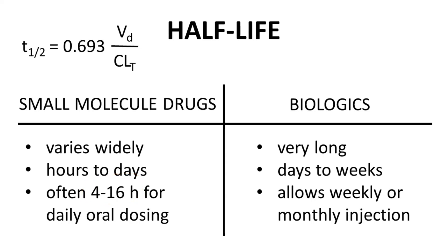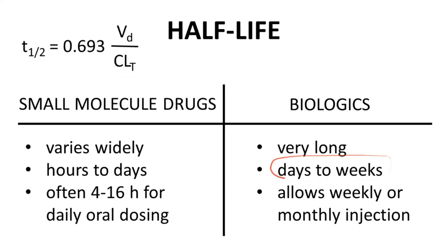In contrast, biologics, although their volume of distribution is low, have an extremely small clearance. Therefore, half-life tends to be quite long and is normally measured in days or even weeks. As a result, biologics can often be dosed on a weekly or even monthly basis. This less frequent dosing can offset some of the inconvenience of delivery by injection.